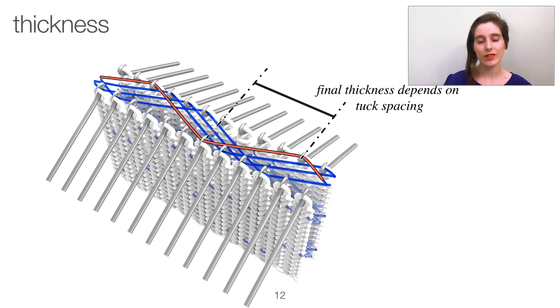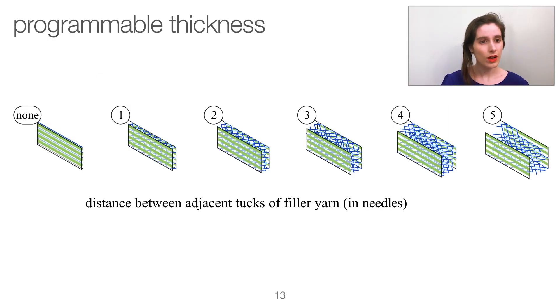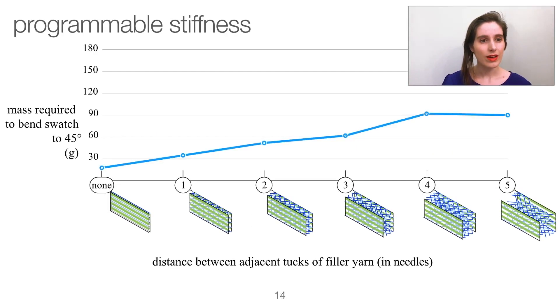Therefore, the final distance between the faces of the fabric is influenced by the width of those zigzags. We can vary that distance by increments of needle spacing with, as we found, stable spacer knits resulting with tuck distances up to about five needles apart. And because the thickness of an assembly affects its bending moment, that spacing or thickness parameter also affects the stiffness of the material overall, which we measure here by loading the swatches until their bending point at about 45 degrees.